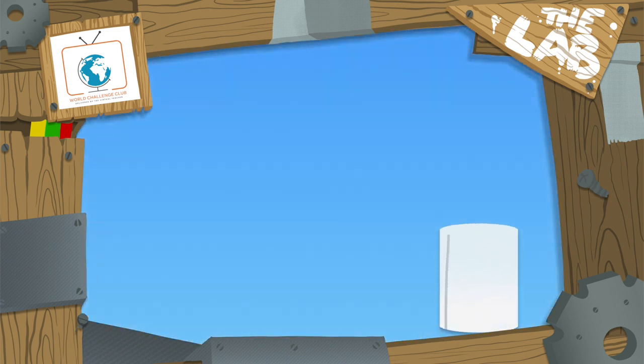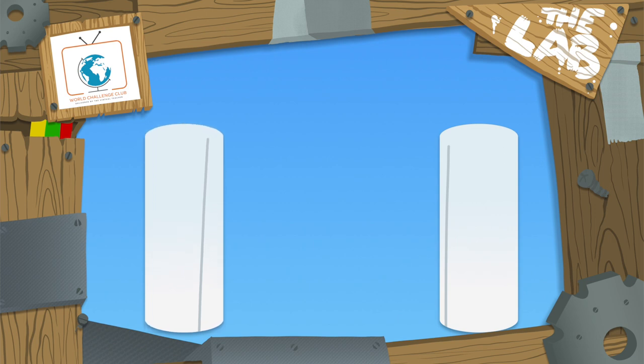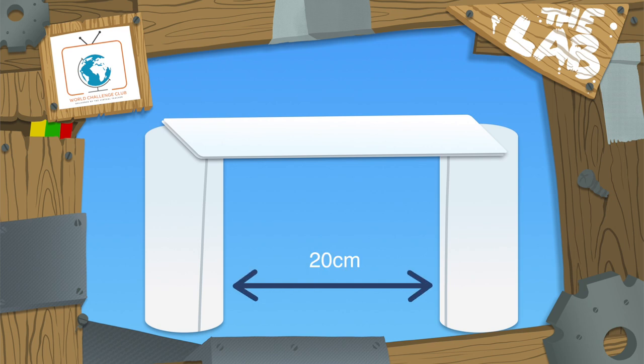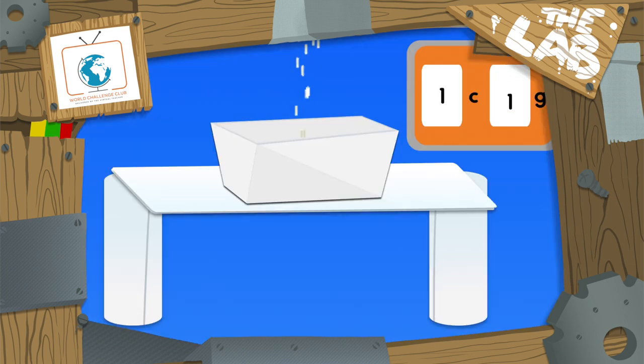So today's challenge is to make a bridge using two sheets of paper. The distance between the supports or piers of your bridge must be at least 20 centimeters. We'll use bottle caps of rice to test the strength of the bridge.